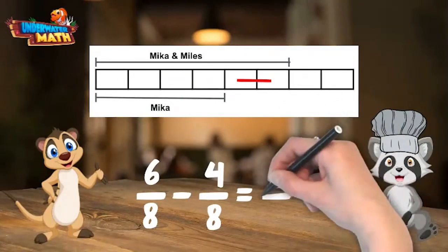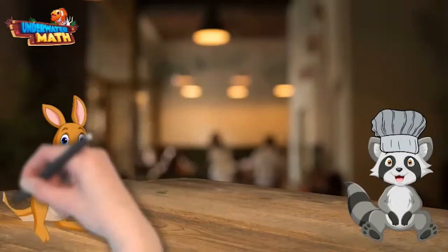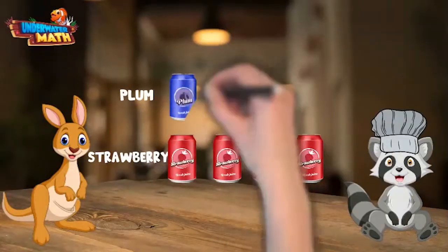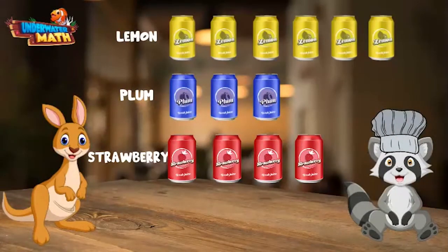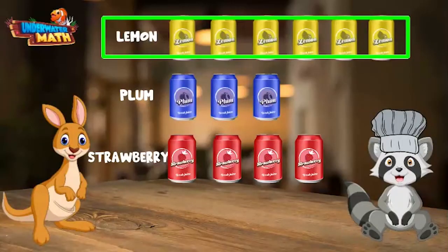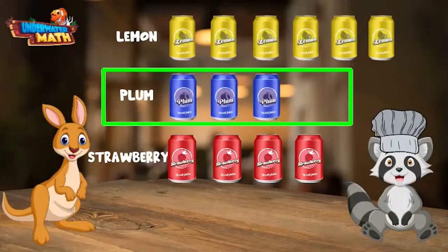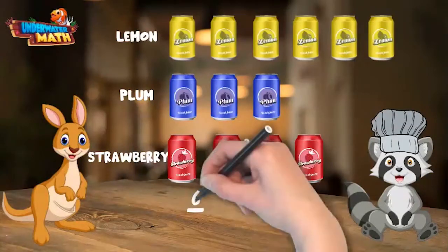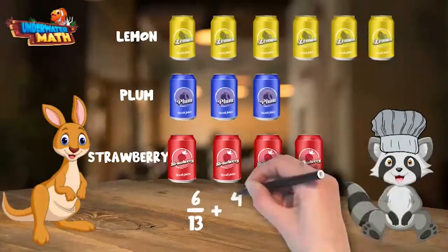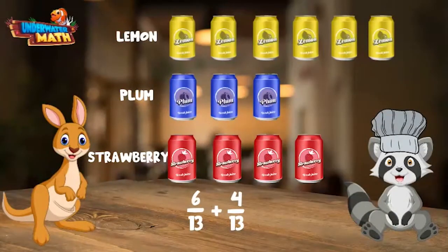Our friends wanted to try different kinds of sodas. This model shows the number of each type of soda they tried. We were wondering what fraction of the sodas were either lemon or strawberry. First we need to know how many total sodas there are: 6 lemon plus 3 plum plus 4 strawberry equals 13 sodas total. 6 out of 13 sodas are lemon, plus 4 out of 13 which are strawberry.